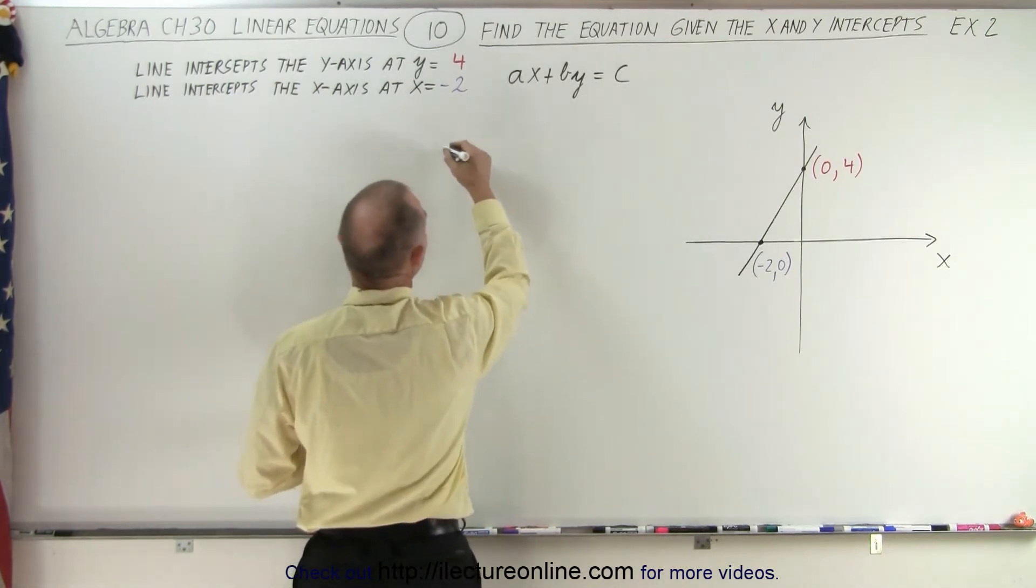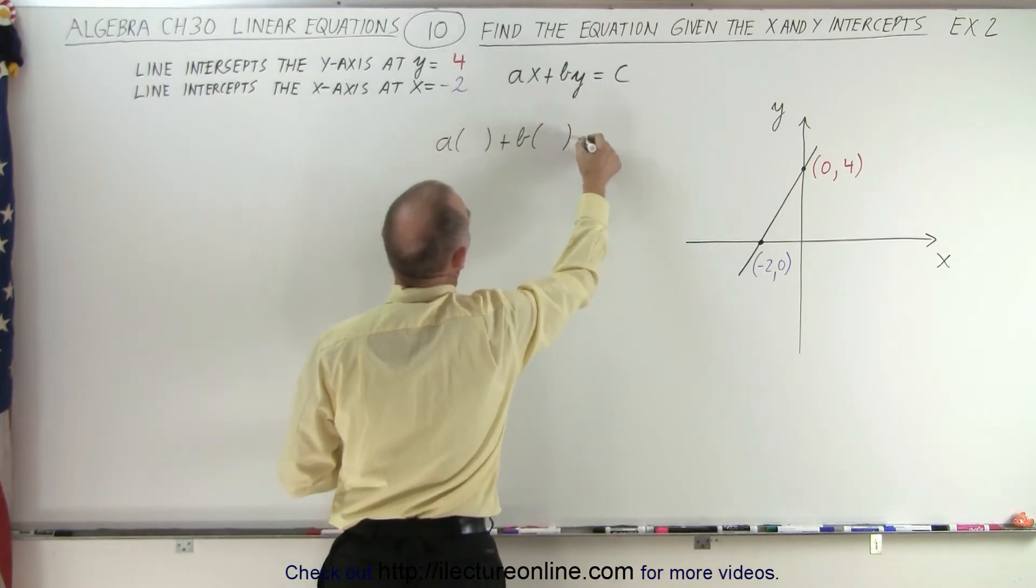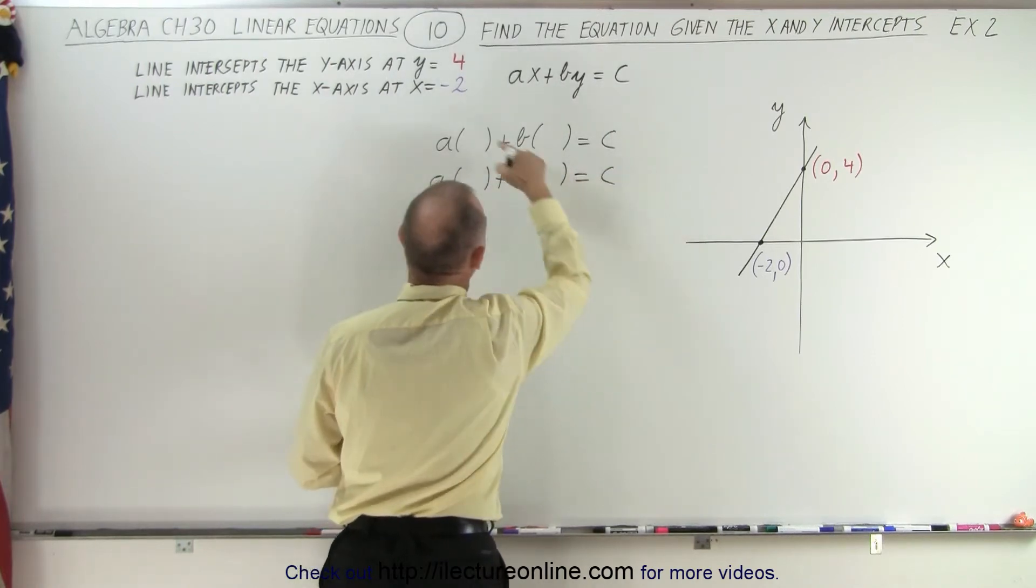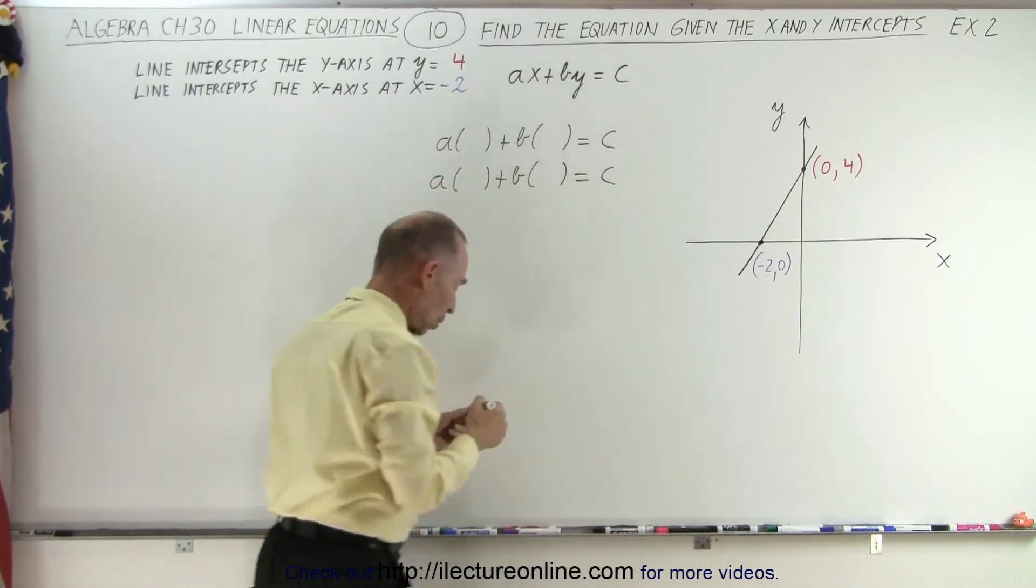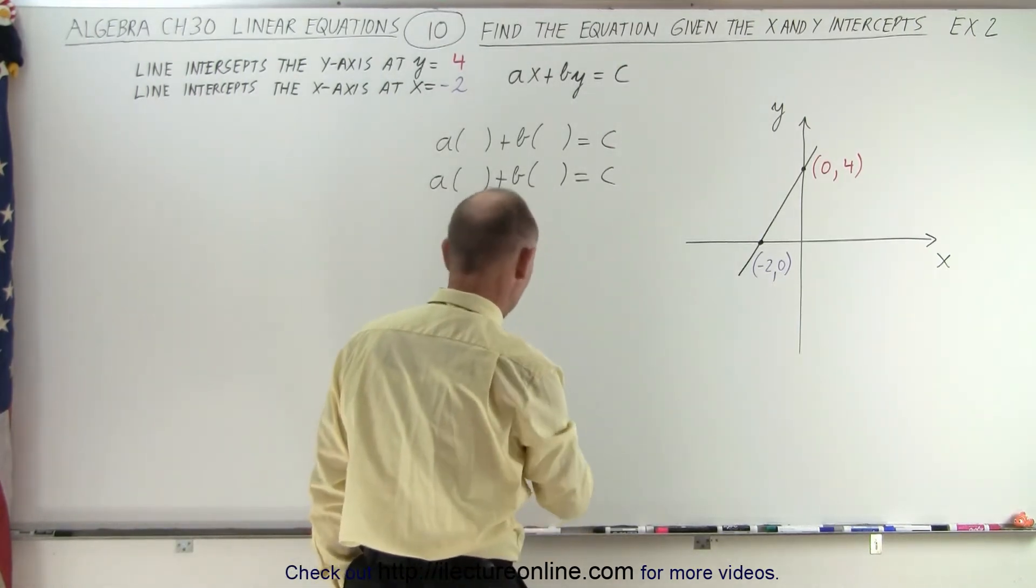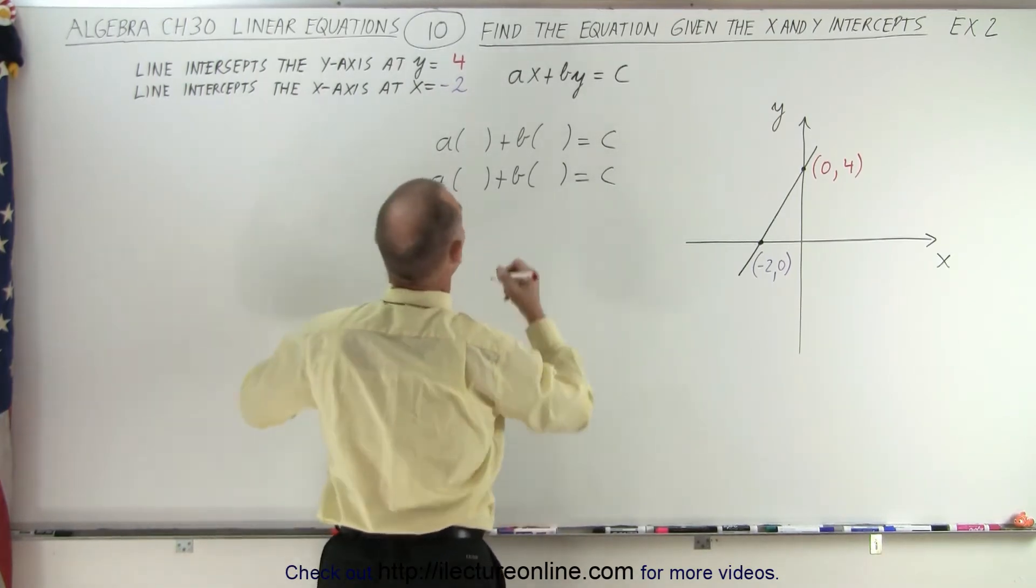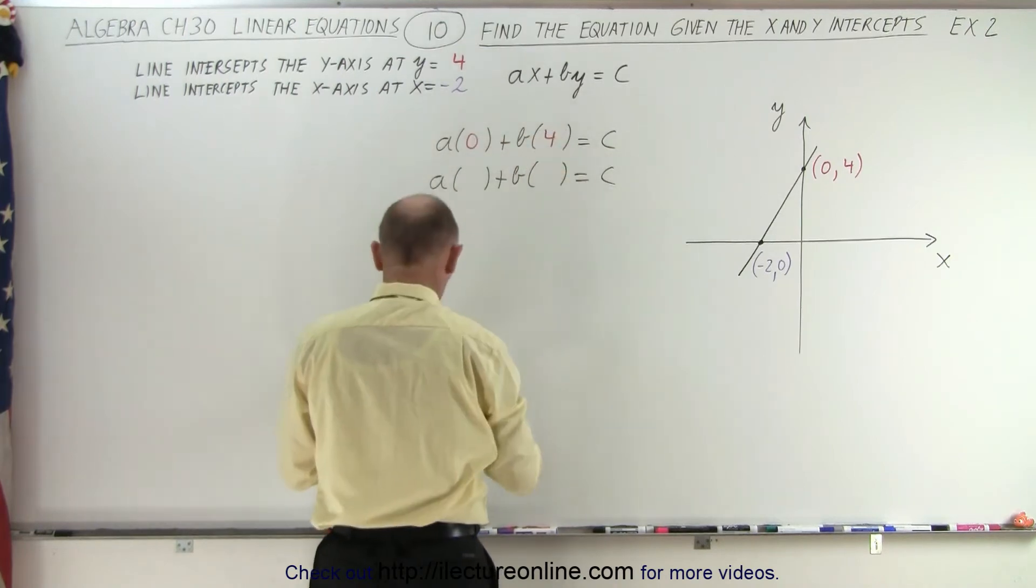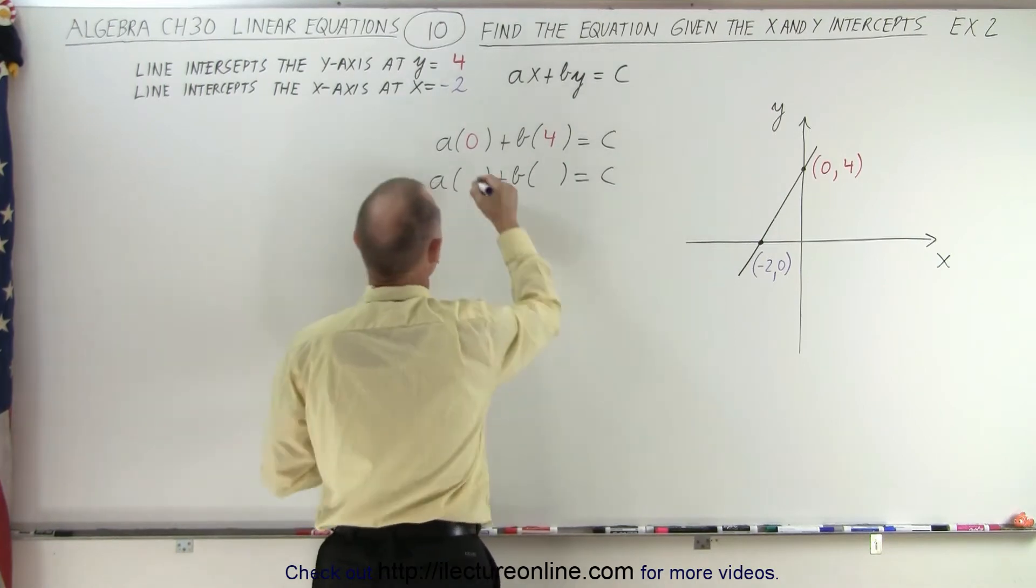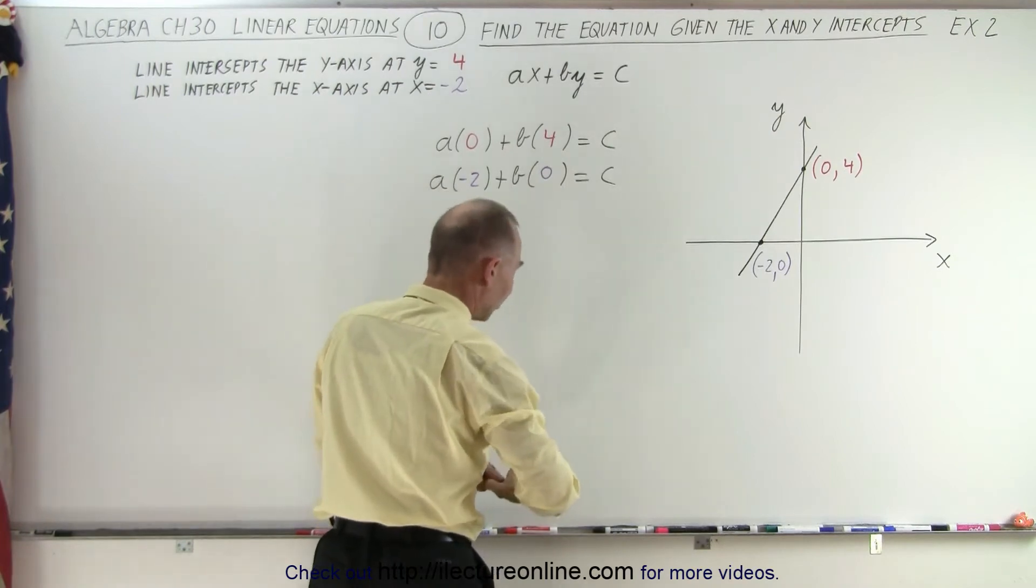So we have a times x plus b times y equals c. And here we're going to plug in the ordered pairs of the two points on the line where the line intersects the x and the y-axis. Using red for 0 and 4, x equals 0, y equals 4. And using the purple color for the second point, x equals negative 2 and y equals 0.